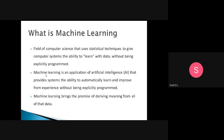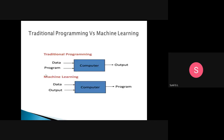All those things we discussed in the previous class. This is the difference between traditional programming and machine learning. In traditional programming, we give data and a program to the computer, and the output is given. For example, for addition of two numbers, you write a C program, give two input values A and B — say 2 and 4 — and the output will be 6.